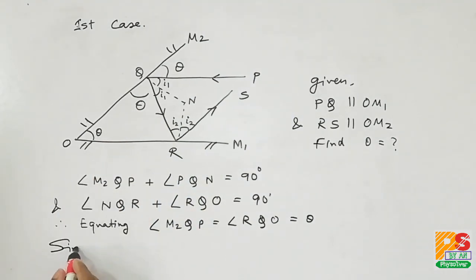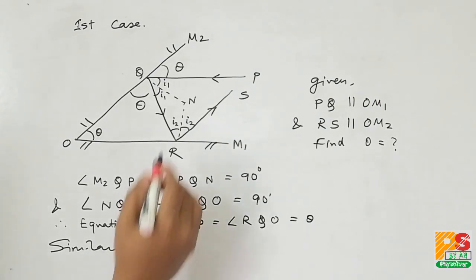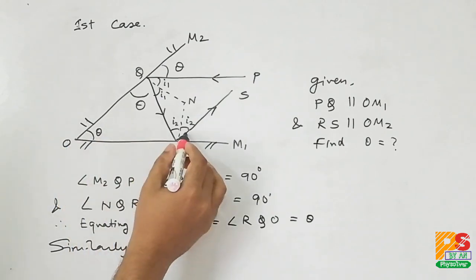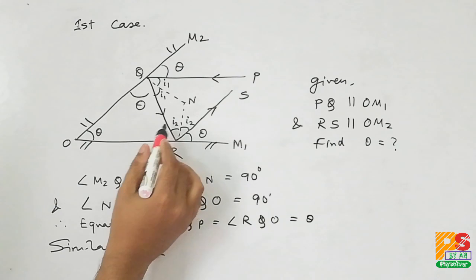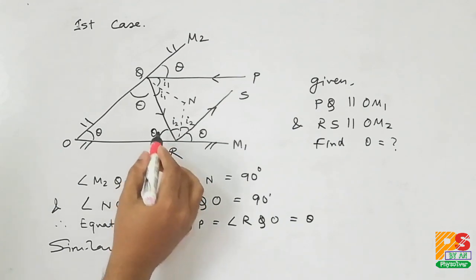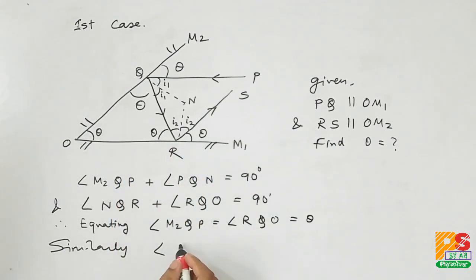Similarly, we can say if this is theta, this angle is theta corresponding. Theta plus I2 should be equal to I2 plus this angle which is again theta. So angle ORQ is also theta.